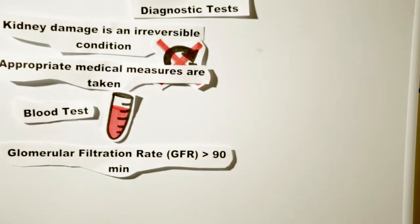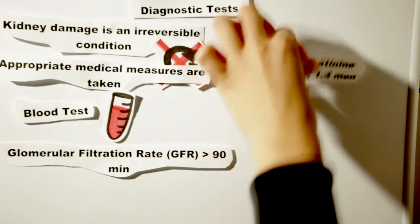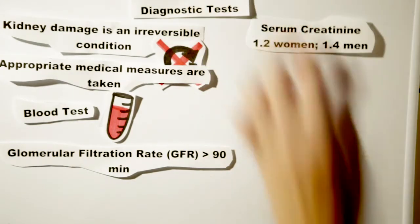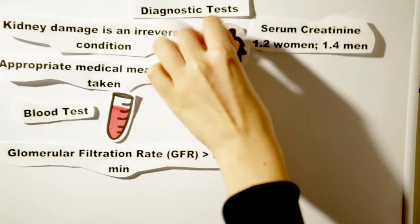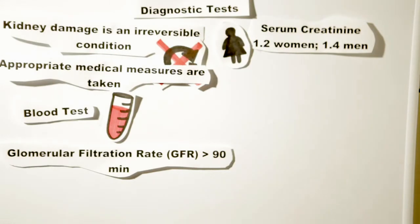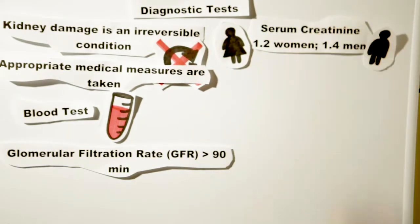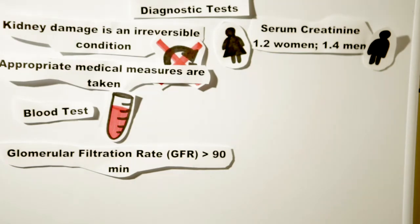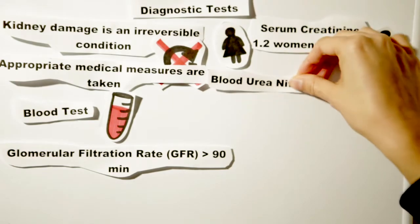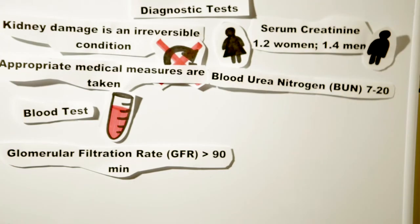Serum creatinine is a waste product that is removed in the urine. Women should have a level less than 1.2 and men should have a level less than 1.4. Higher than this means the kidneys are not functioning properly and may indicate the onset of kidney failure. A BUN level of 7 to 20 is normal.